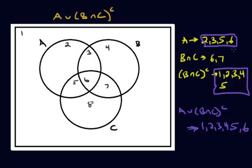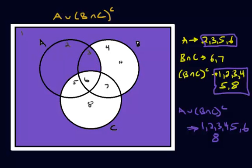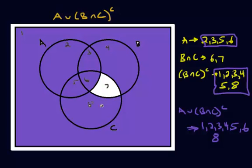I feel like I'm missing one. I don't have eight. For B intersect C complement, there's also eight. So my final answer is regions one, two, three, four, five, six, and eight — notice there's no seven in either set. Go and shade all those regions: one, two, three, four, five, six, and eight. This matches what we got in the last example.